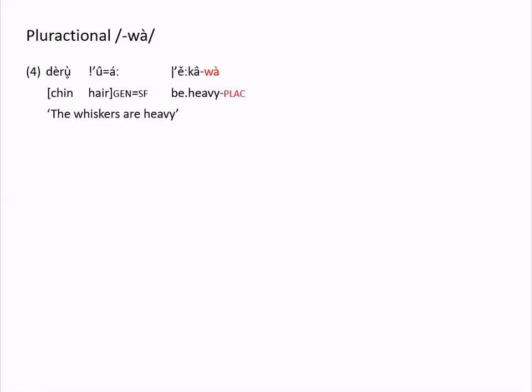So far in the presentation of object markings, we've seen two morphemes that appear in some of the plural forms: wa with a short low-toned vowel, and me. I'd like to look at these in more detail, starting with wa. A common function of this morpheme is to indicate a plural subject — as in example four, 'the whiskers are heavy.' Without this morpheme the sentence would be grammatically complete but would mean 'the whisker is heavy,' since the verb 'to be heavy' does not show suppletion for subject number and can have a singular or plural subject.